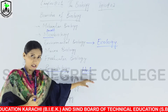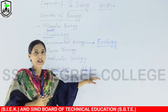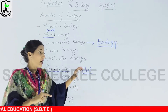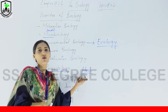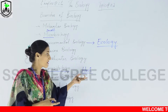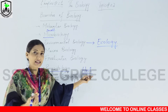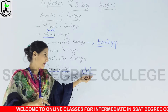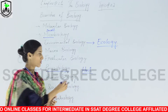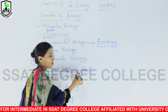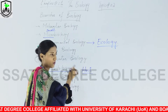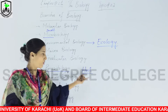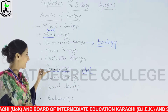Parasites live on the host to obtain food and shelter, and in return they cause harm to the host. So the definition of a parasite is: it is an organism that cannot live its life on its own and depends on another organism — the host — to live its life. The parasite takes food and shelter from the host, and in return causes damage to the host, such as causing disease. All such parasites are studied under the branch called parasitology.